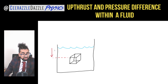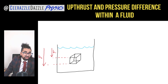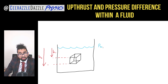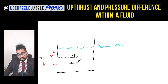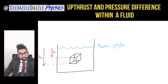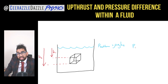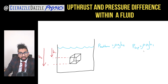The height from the surface to the top of the cube we'll call h1, and the height to the bottom we'll call h2. So the pressure at the bottom of the object will be given by rho g h2. The pressure at the top will be equal to the density times by the gravitational field strength times by h1.